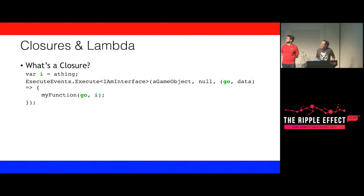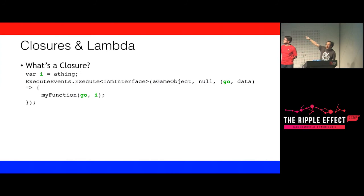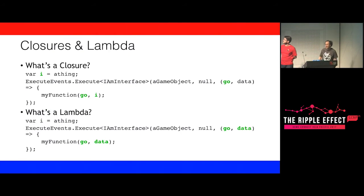Closures: a closure is an anonymous function that captures a variable from outside that function. Because that external variable is used inside the anonymous function, it has to be saved somewhere — and it gets saved on the heap. A lambda that does not reference any external variable is fine and doesn't allocate. I tested this and it's confirmed.